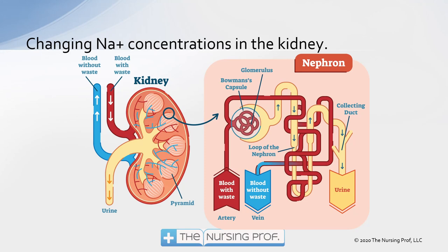If we blow up one nephron in the kidney — keeping in mind there are millions of nephrons — we can see that the functional area, the glomerulus, filters the blood with waste. It then gets filtered back through the tubules and into the collecting duct, and waste products go out in the urine. The filtrate comes out of the glomerulus, goes into the ascending duct, down through the loop of Henle, into the collecting duct, and finally out as urine.